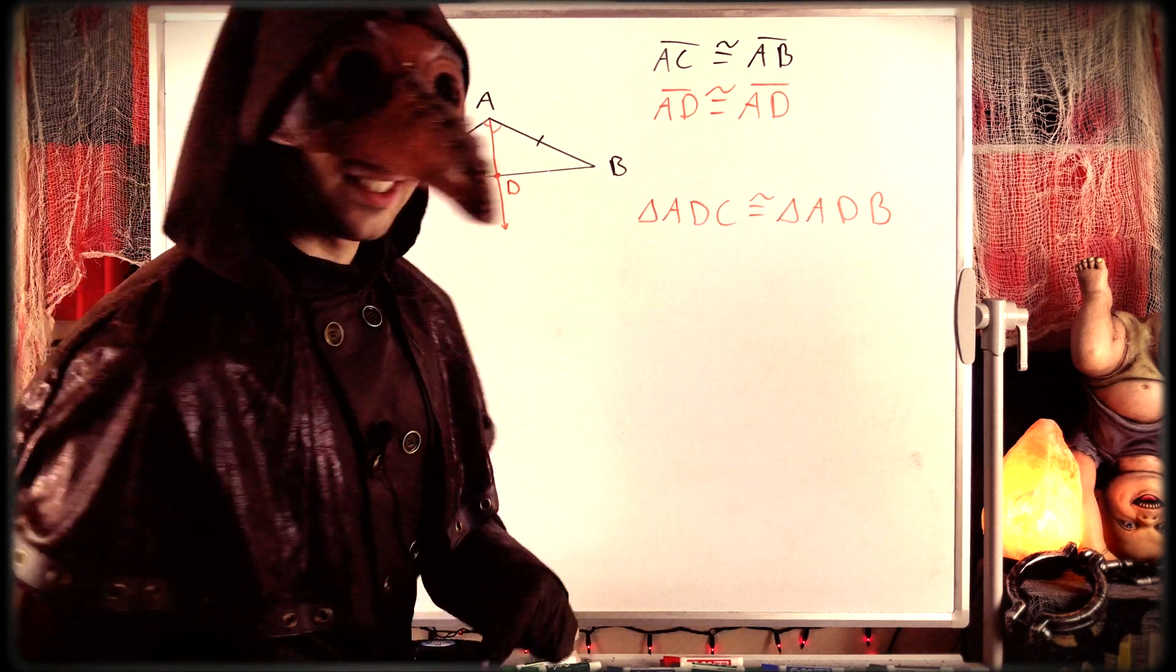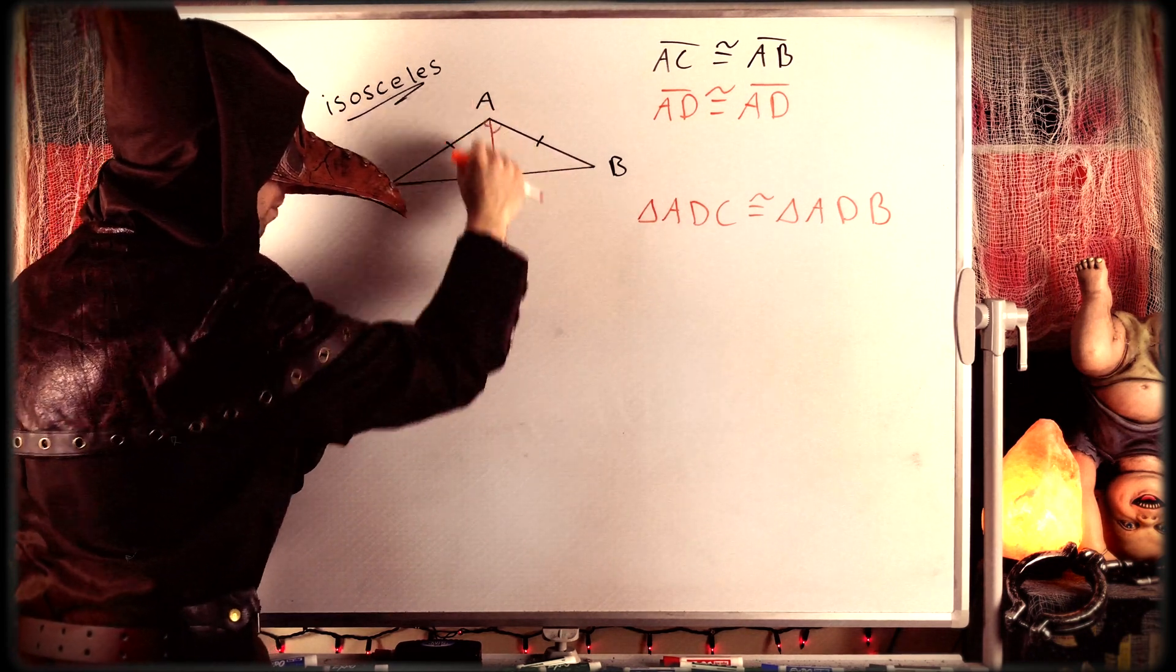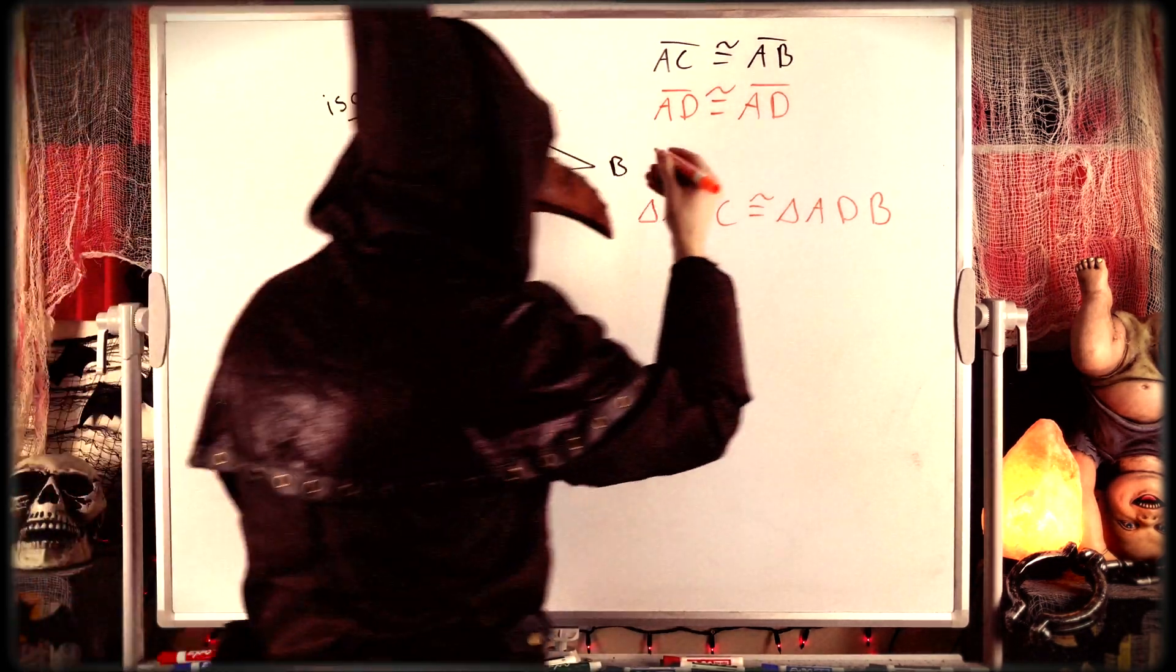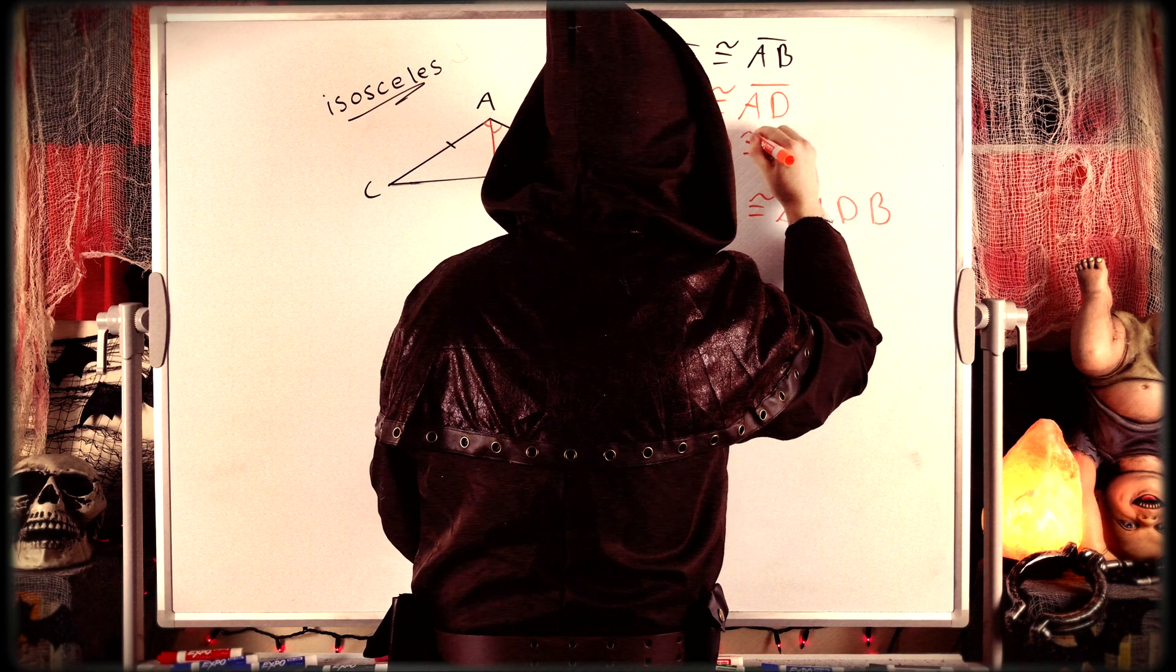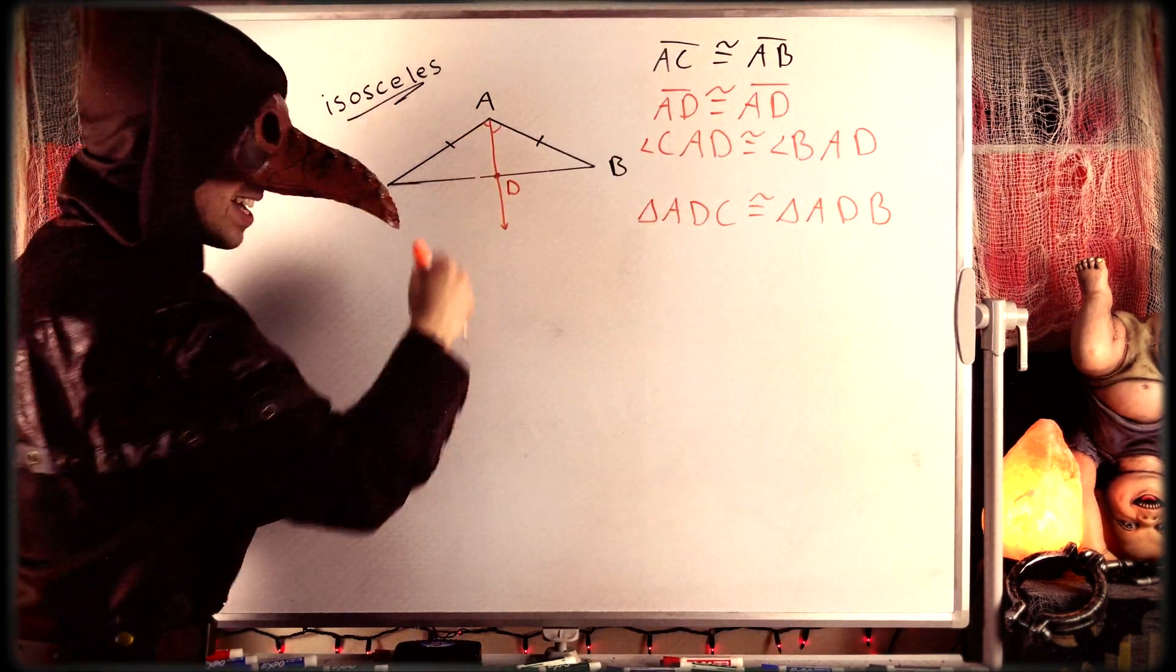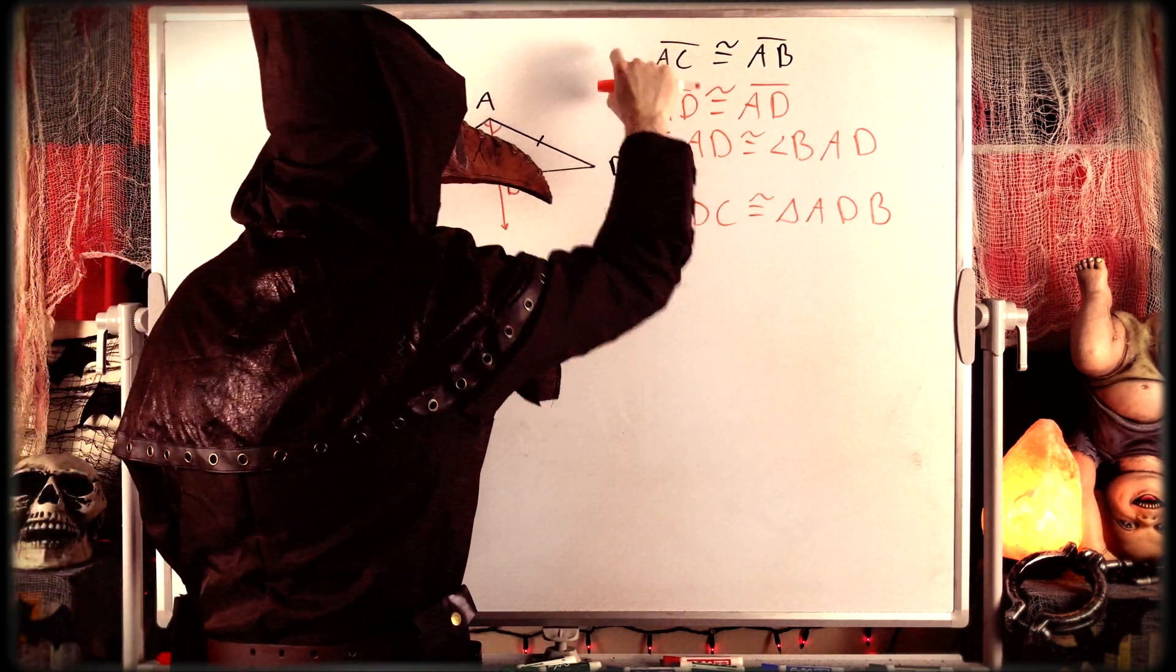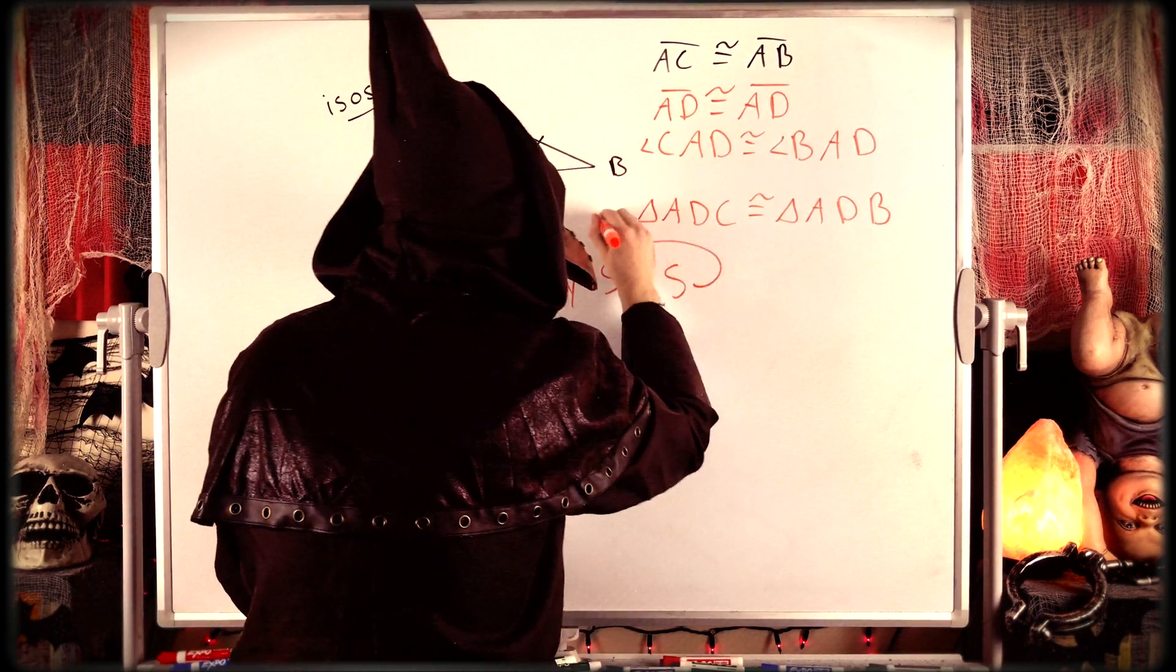Thus, all we need to finish the side angle side congruency is to show that the included angles between these two sides, angle CAD and angle BAD, are both congruent. And we already know that because this ray AD was defined to be an angle bisector. So we already know those two angles are congruent. We'll write that here, angle CAD is congruent to angle BAD. Accidentally just erased a little bit of the triangle. And again, that's because this ray is an angle bisector. So this is half of angle A, and this is half of angle A. And that's it. We've got these pairs of congruent sides. Their included angles are also congruent. So by side angle side, we have our desired triangle congruence.